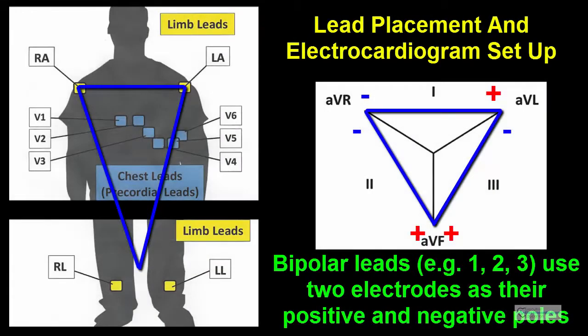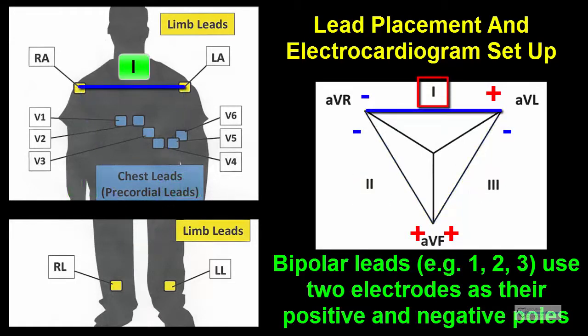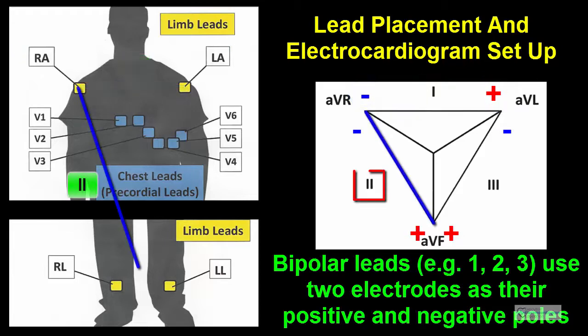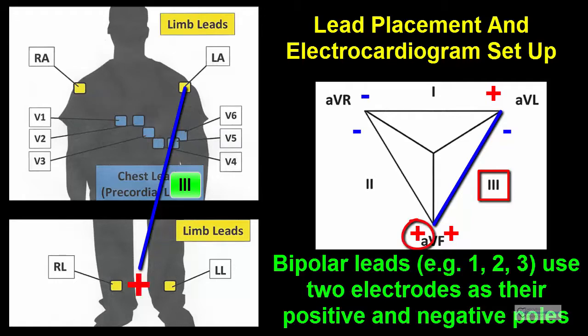Bipolar leads, such as leads 1, 2, and 3, use two electrodes as their positive and negative poles. For lead 1, the positive pole is the left arm electrode, while the negative pole is the right arm electrode. For lead 2, the positive pole is a leg electrode, while the negative pole is the right arm electrode. For lead 3, the positive pole is also a leg electrode, and the negative pole is the left arm electrode.